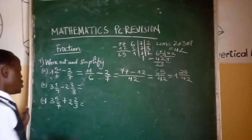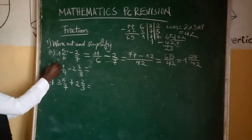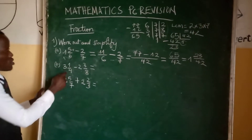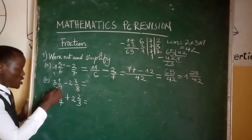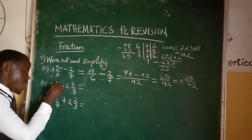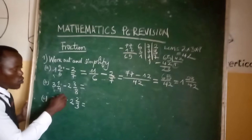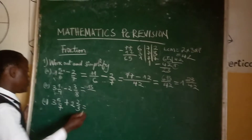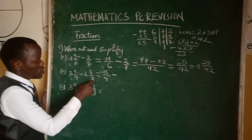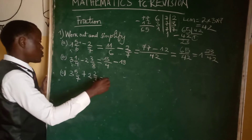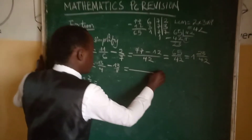Let's go to the next sub-question, 1B: 3 and 1 over 4 minus 2 and 3 over 8. We convert those mixed fractions into improper fractions. As we said previously, we take the whole number times the denominator plus the numerator. So: 3 times 4 equals 12, plus 1 equals 13, giving 13 over 4. And: 2 times 8 equals 16, plus 3 equals 19, giving 19 over 8. Now we look for the common denominator.